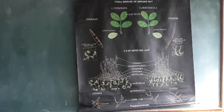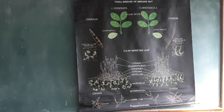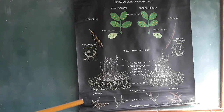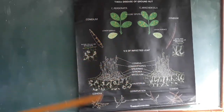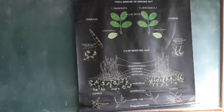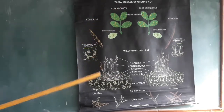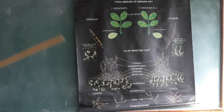Tikka disease of groundnut occurs in all groundnut growing areas of the world. Due to this disease, the loss may be up to 50% or more. It is a fungal disease caused by two fungi: Cercospora personata and Cercospora arachidicola. The most favorable weather conditions for this disease are hot and wet conditions, which favor the formation of spots.